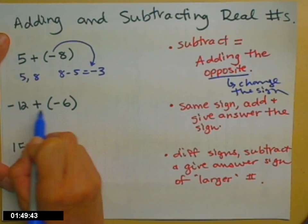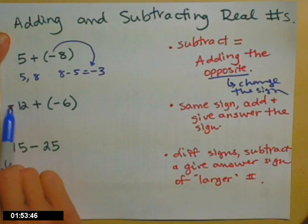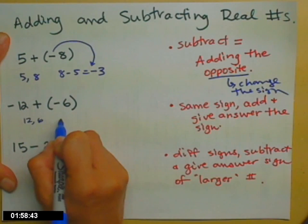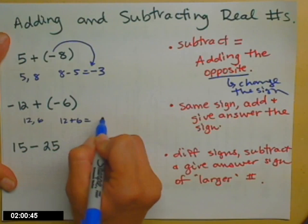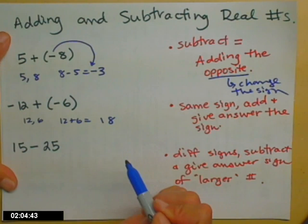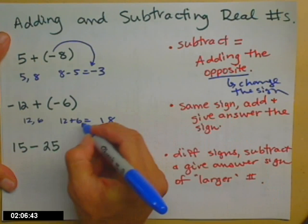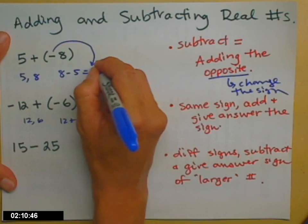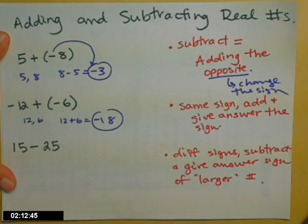So I'm adding two numbers that have the same sign. Same sign, take the absolute value. So that's going to be 12 and 6. Add the numbers. So 12 plus 6 is 18. And then give your answer the sign that the two originals had. These guys were both negative, so that means my answer is negative. I'll go ahead and circle those so you know where the answer is.